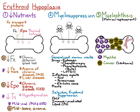Myelofibrosis is when there is fibrosis or scarring of the marrow space. Oftentimes we don't really know what incited the myelofibrosis. We often catch it late in disease where the fibrosis and the collagen is there, but we don't know what caused it.